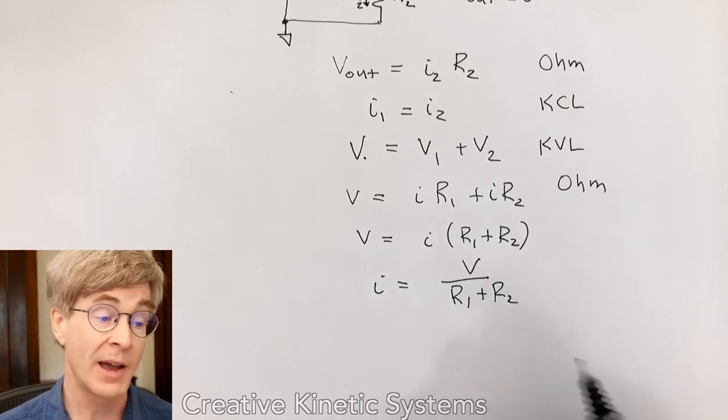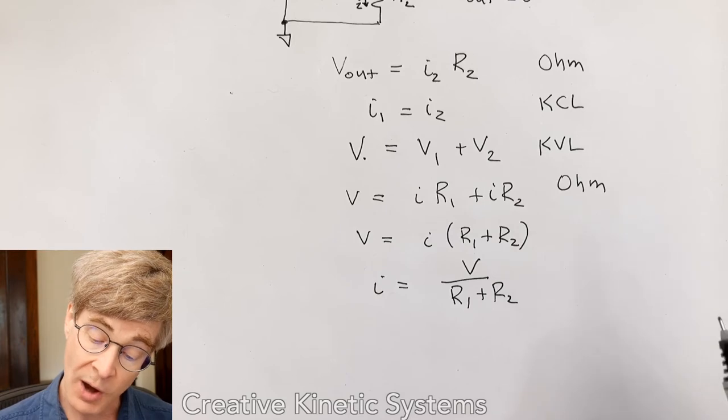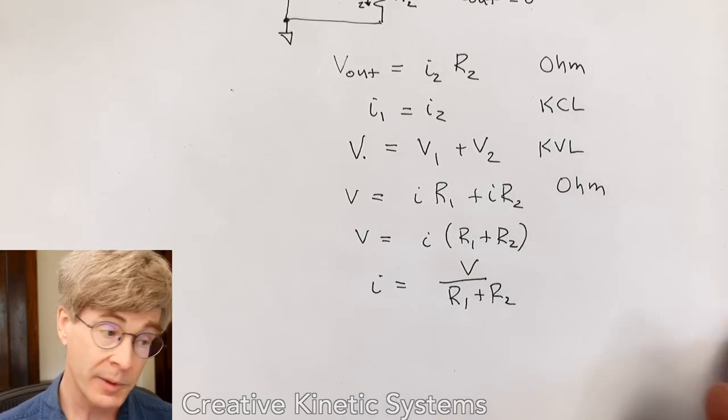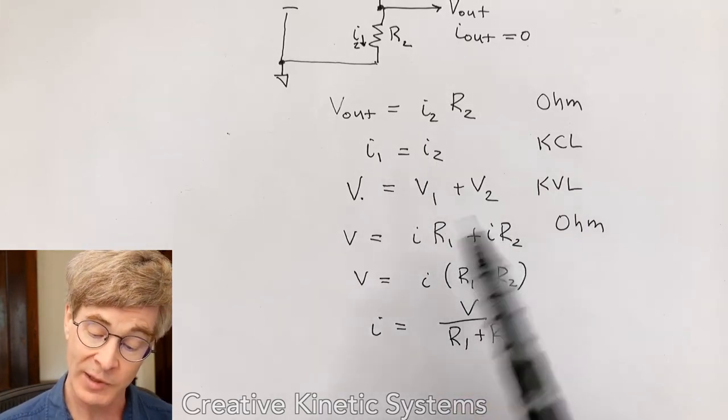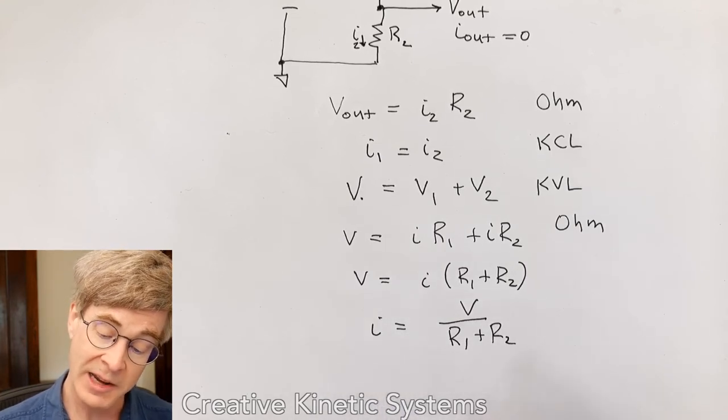At this point, I can go back and apply Ohm's law one more time because we already know that from the very, very first line at the top, which you can see here, right? That I2 is related to Vout and R2. So if I simply substitute on the left side here, the values from that first, sorry, the expression from that first line,